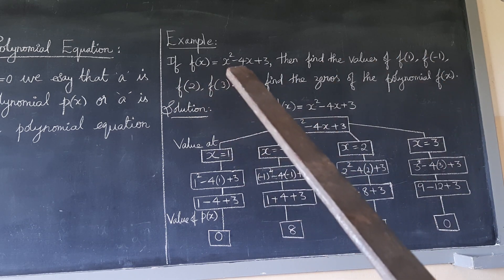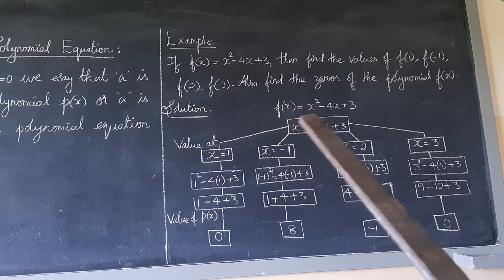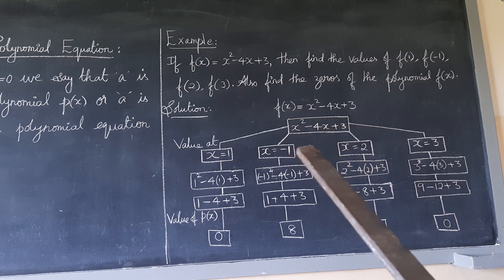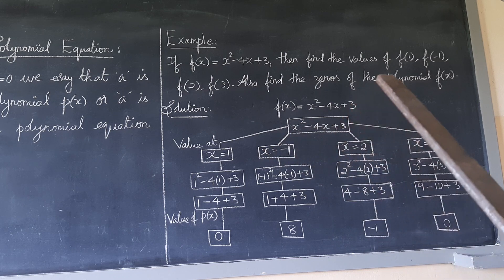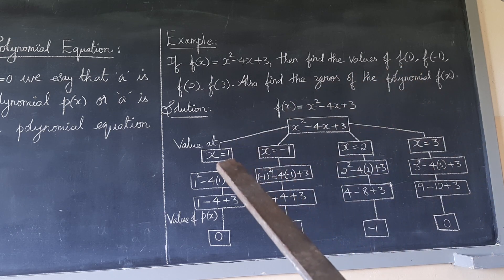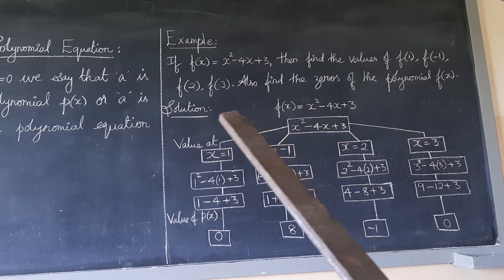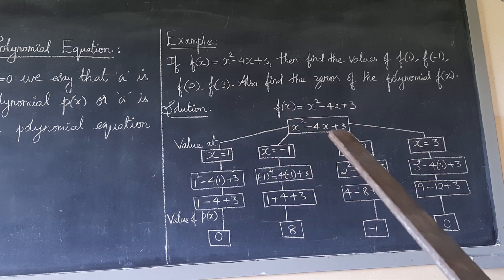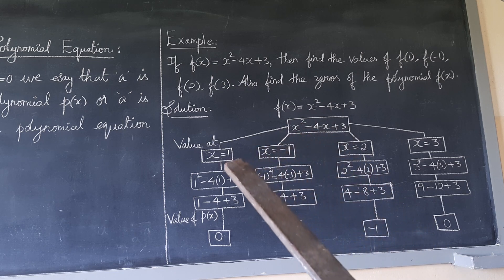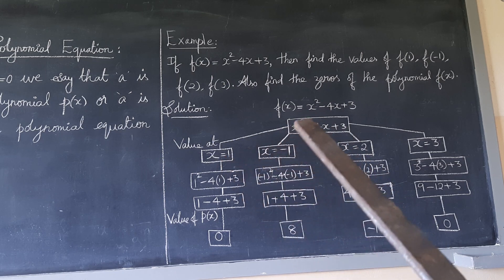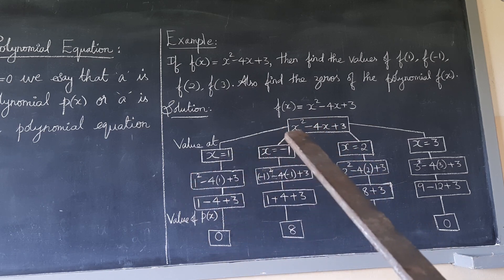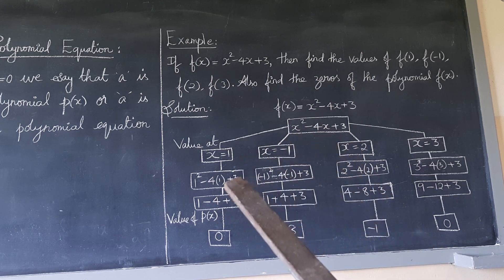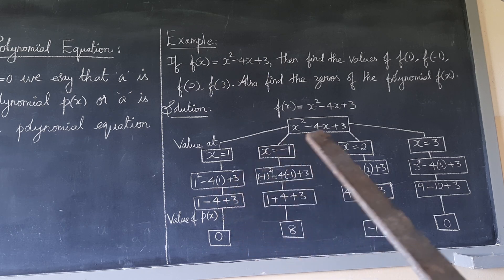So f(x) is equal to x squared minus 4x plus 3. In the expression, we substitute the value in the x place. For f(1), put x = 1: 1 squared minus 4 times 1 plus 3.